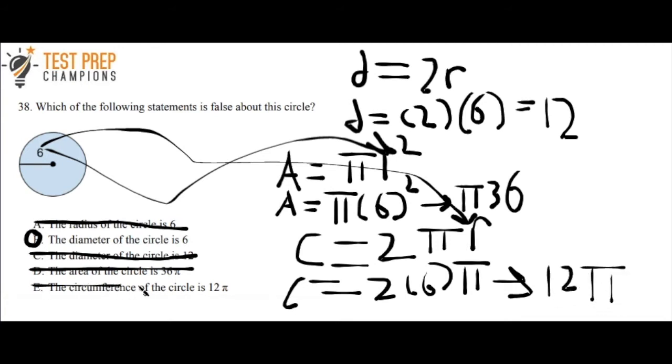So the one that was false, as we already found, was B. Hopefully, if you didn't know how to find the area or circumference of a circle, this was a good review for you.